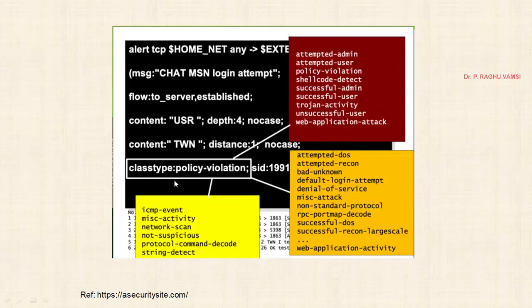Next is class type. We previously saw trojan-activity for malware traffic rules. There are many predefined class types: policy-violation, attempted-admin, attempted-user, shellcode-detect, successful-admin, successful-user, trojan-activity, unsuccessful-user, web-application-attack, attempted-dos, attempted-recon, bad-unknown, icmp-event, misc-activity, and network-scan.